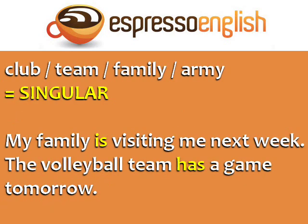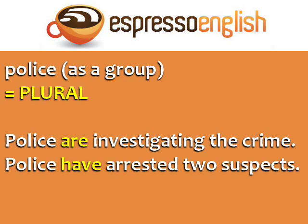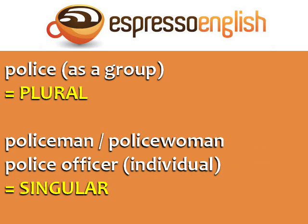Club, team, family, and army are other examples of words that refer to a group of people, but they are singular. For example, 'my family is visiting me next week' and 'the volleyball team has a game tomorrow.' In British English, 'family' and 'team' are often plural. The word 'police' as a group is plural — for example, 'police are investigating the crime' and 'police have arrested two suspects.' If you want to talk about an individual, you can say policeman, policewoman, or police officer — these are singular.